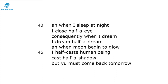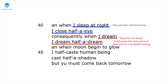In this part of the poem, he further reinforces just the absurdity. If he's half-caste, does that mean he has half a body with half an ear? When he sleeps at night, does he close half an eye? This is a really sarcastic and humorous interpretation of this idea of being half-caste. Does that therefore mean when you dream, you dream half a dream? The repetition of 'dream' emphasises that the racist person's view is very contradictory — this idea of somebody who is mixed race being half a person.